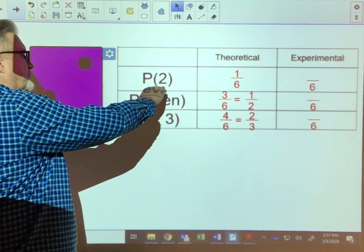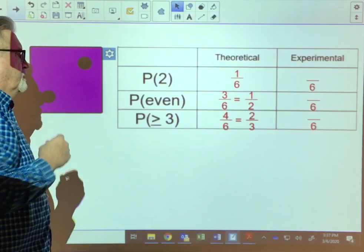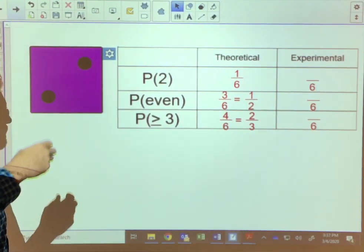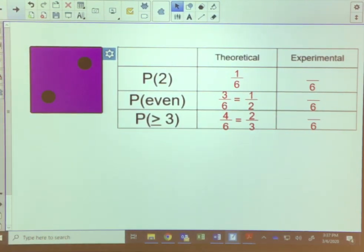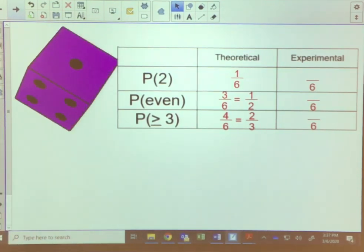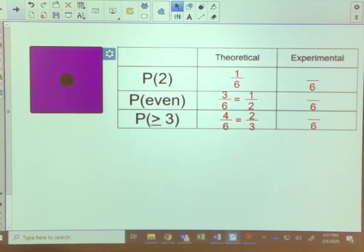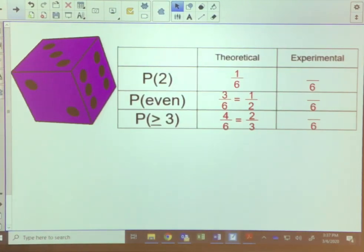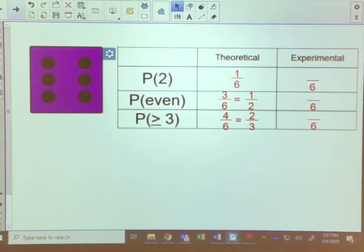Experimental is when we actually try it. Just to save time here, we're just going to try to do the first one here. The probability of rolling a two. We need to roll this dice six times and record how many of those times that we get a two. So here's our first roll and we get a one. Here's our second roll and we get a six.